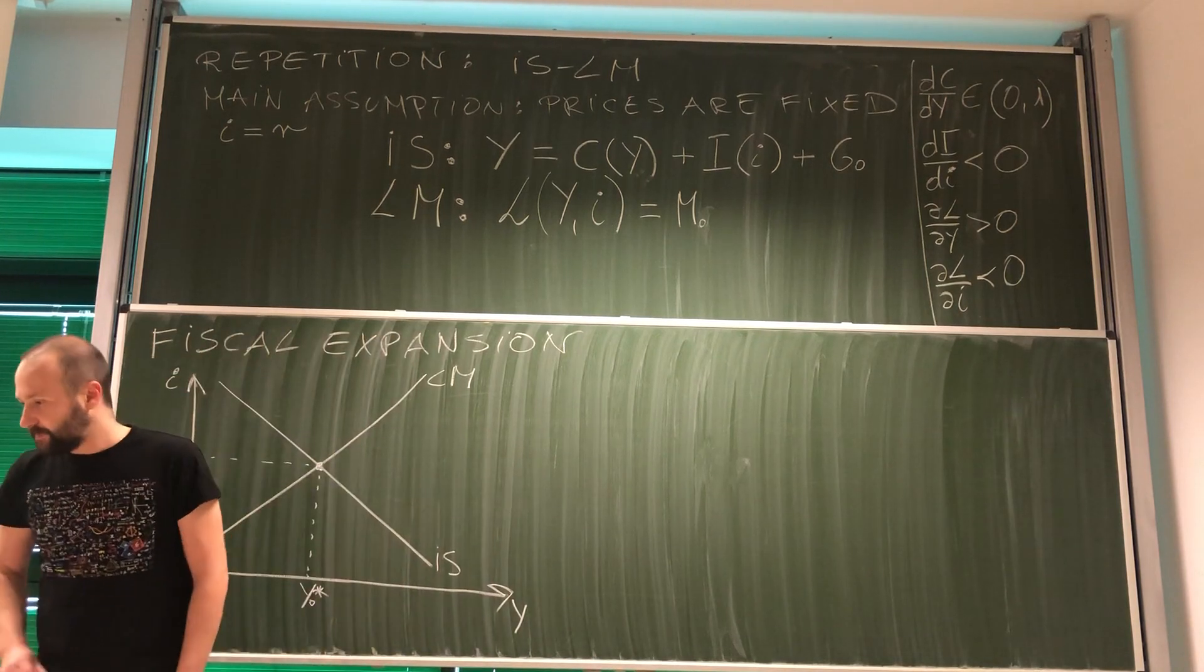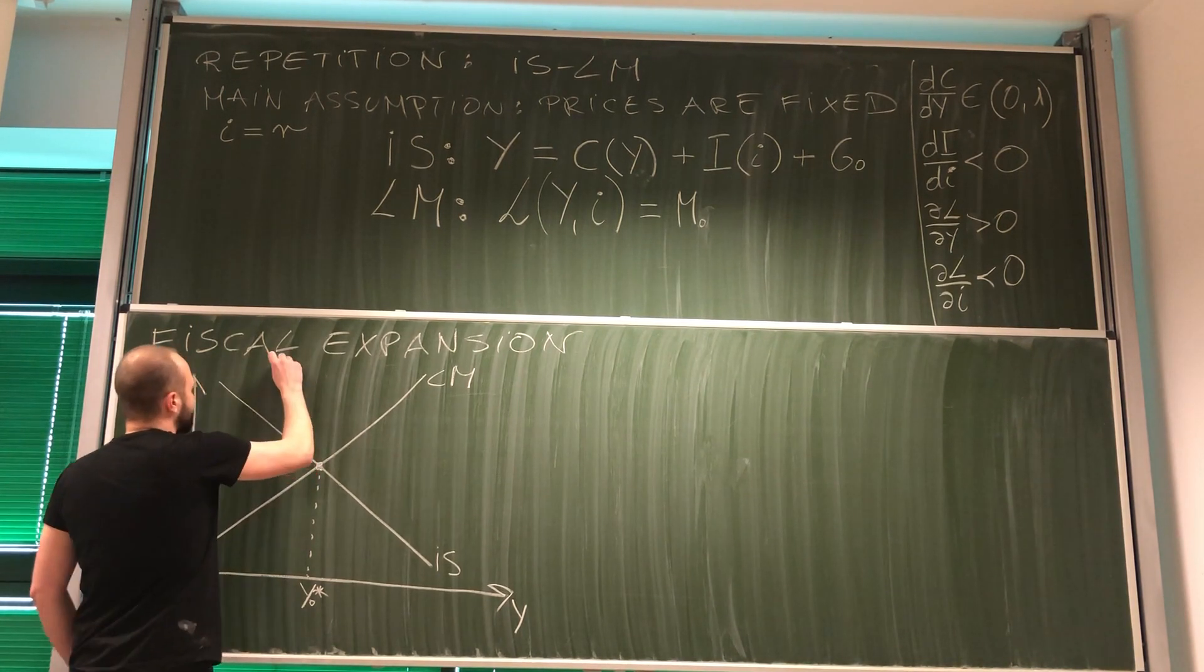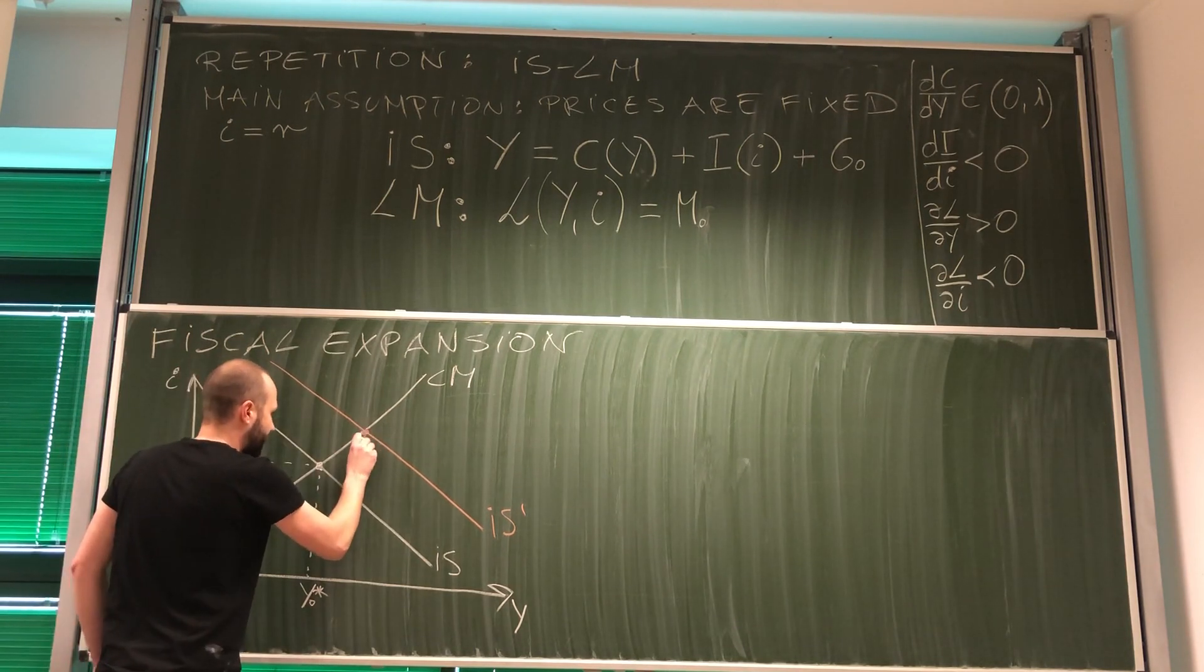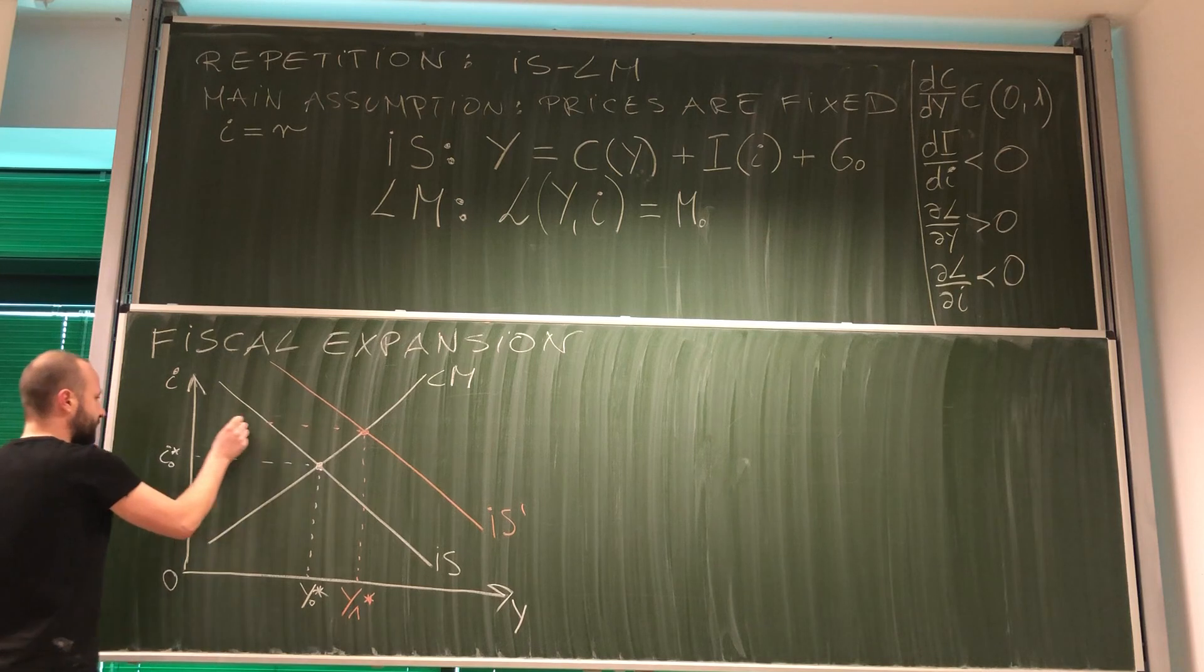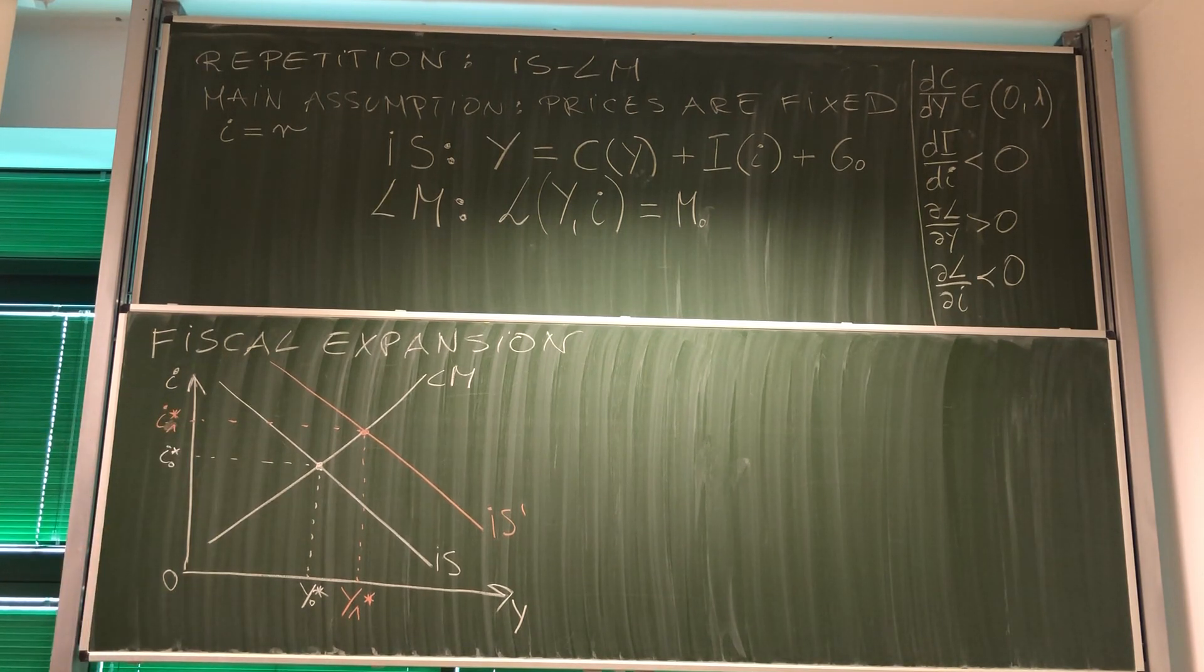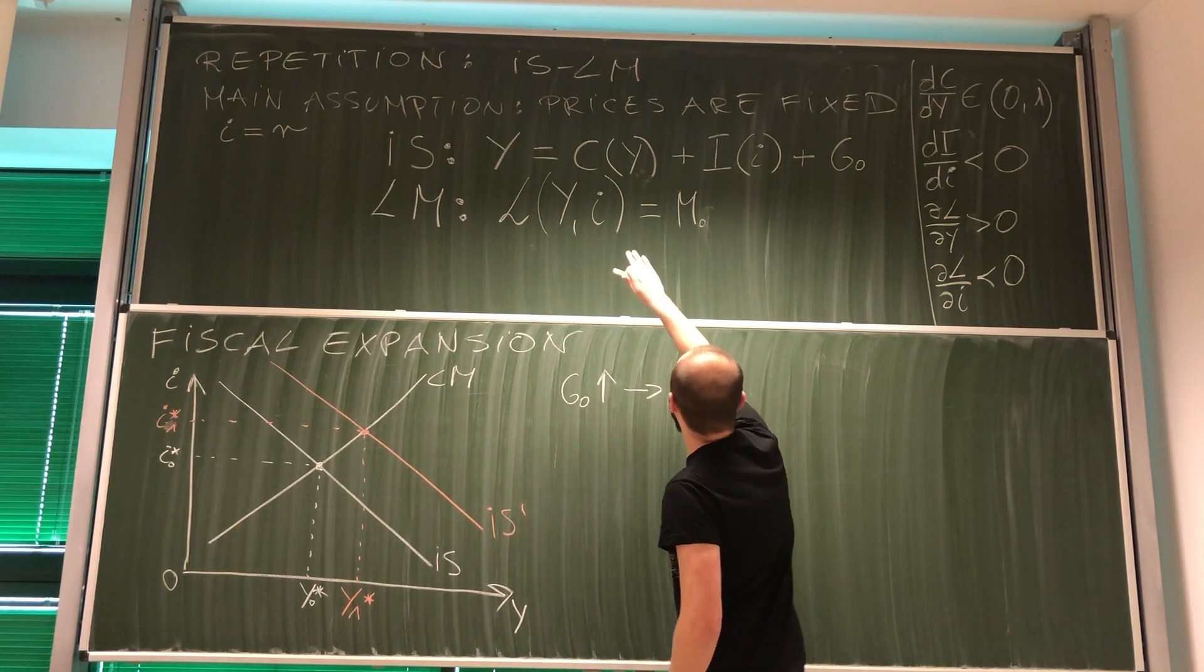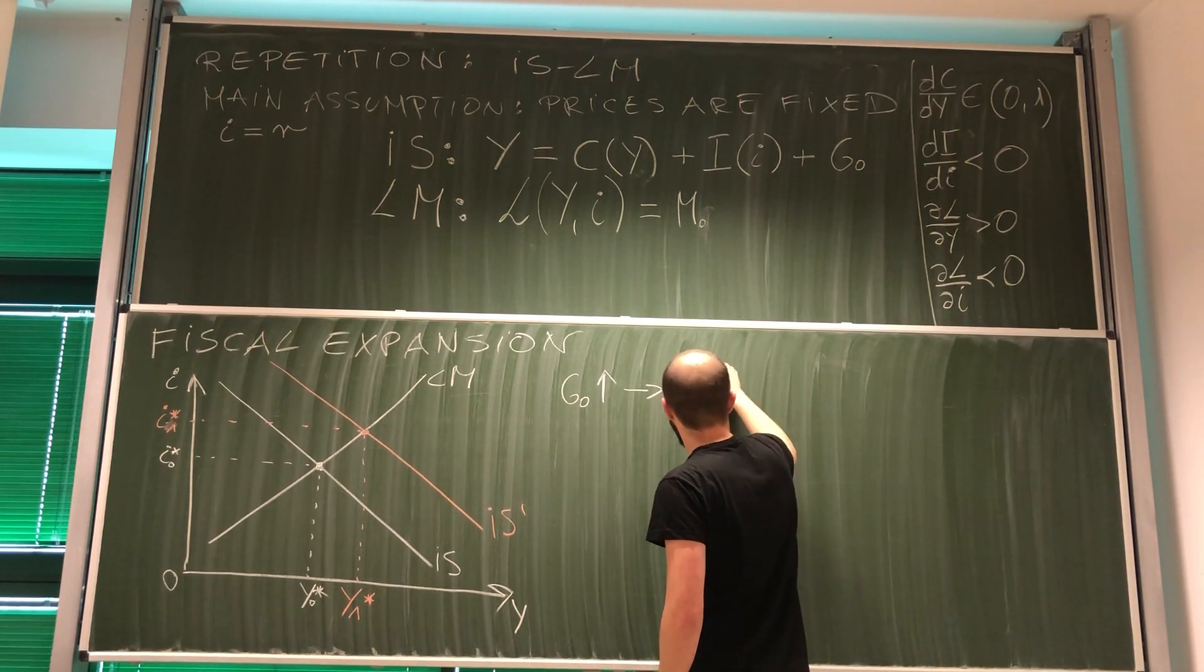I hope you remember that IS-LM represents all combinations of interest rate and income for which there is equilibrium in market for goods and services and in the money market. And only at this point there is equilibrium in both markets. So let's just say the government decides to increase the level of spending. We know that this moves IS curve to the right. And right away we see that it has two consequences. First, is that equilibrium level of income goes up, and the second is that equilibrium level of interest rate goes up.